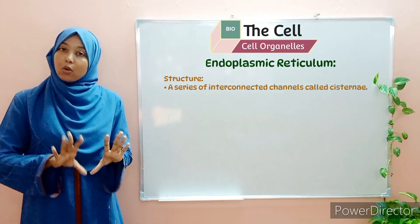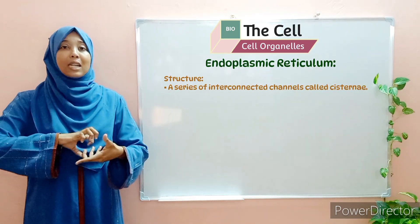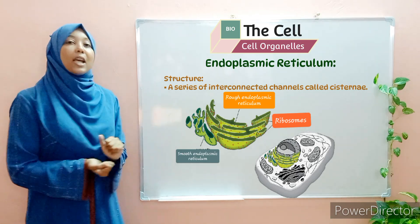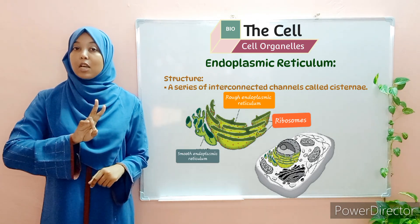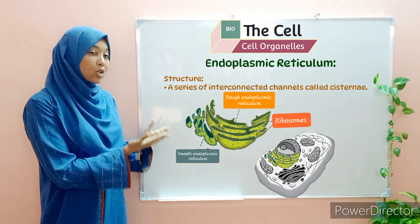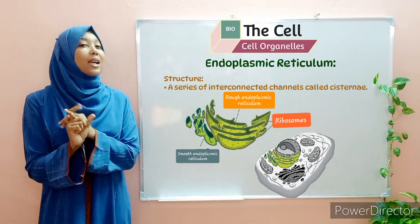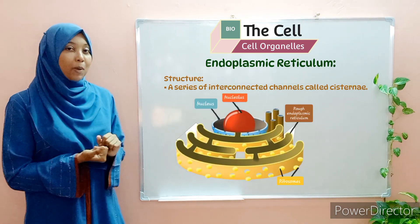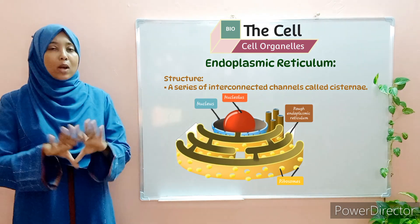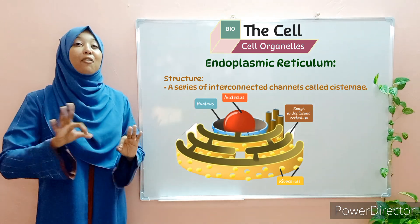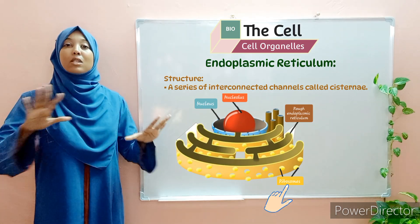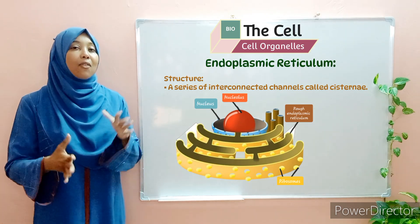Endoplasmic reticula are of two types: the smooth endoplasmic reticulum and the rough endoplasmic reticulum. These two differ from one another in both structure and function. The rough endoplasmic reticulum — or rough ER — consists of ribosomes that are attached to its surface. These ribosomes give it a rough-like appearance, hence the name. The function of the rough endoplasmic reticulum is to transport proteins.